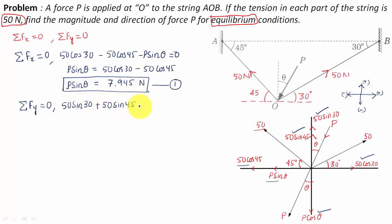So we write 50 sine 30 plus 50 sine 45 minus P cosine theta equals zero. The value of P cos theta equals 50 sine 30 plus 50 sine 45, which equals 60.355 Newtons. This shall be your equation number two.